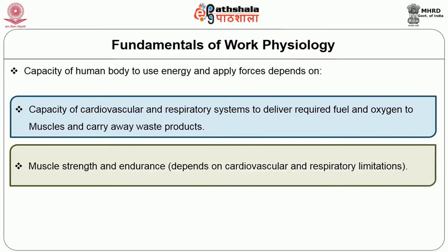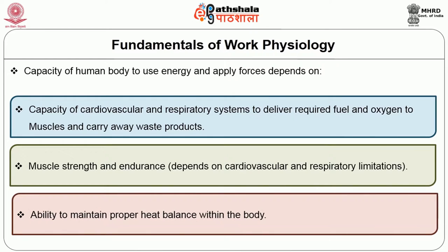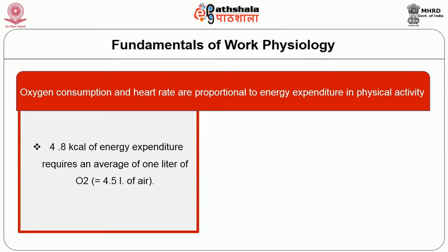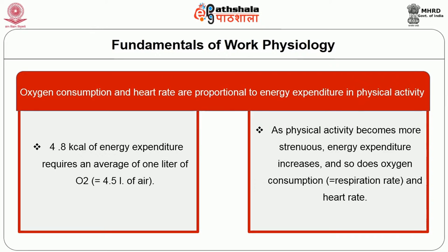The second factor is muscle strength and endurance, which depends on cardiovascular and respiratory limitations. The third is the ability to maintain proper heat balance within the body. Oxygen consumption and heart rate are proportional to energy expenditure in physical activity. 4.8 kilocalories of energy expenditure requires an average of 1 liter of oxygen, which equals 4.5 liters of air. As physical activity becomes more strenuous, energy expenditure increases, as does oxygen consumption, respiration rate, and heart rate.